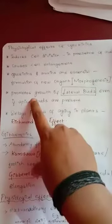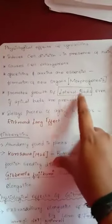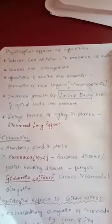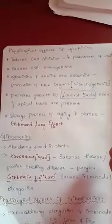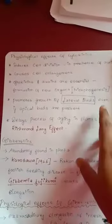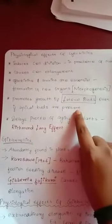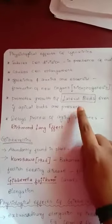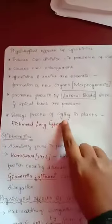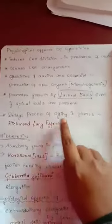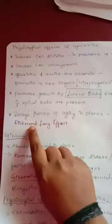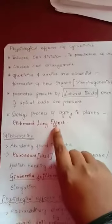Cytokinins also promote the growth of lateral buds — that is, buds present on the sides of the plant — even when apical buds are present. This prevents apical dormancy. Cytokinins also delay the process of aging in plants, which is called the Richmond-Lang effect.